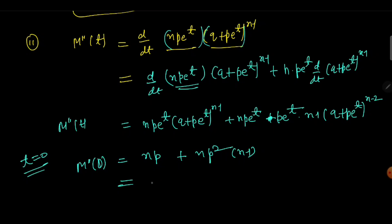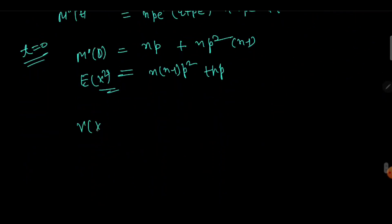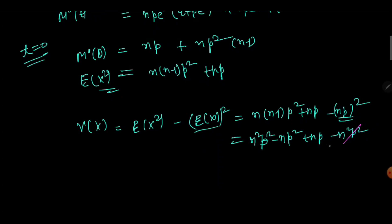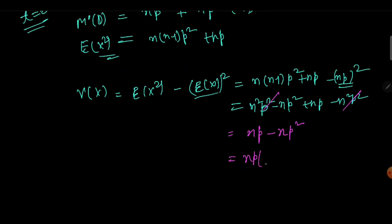So M''(0) = n(n−1)p² + np, which gives us E[X²], the second moment. To find the variance, we use V(X) = E[X²] − (E[X])², which is n(n−1)p² + np − (np)². Expanding and simplifying: n²p² − n²p² cancels, leaving np − np², which factors as np(1 − p). This is the variance, also written as σ².